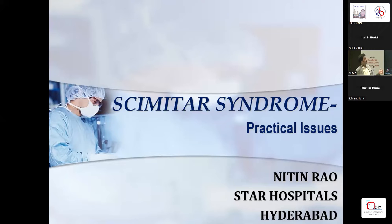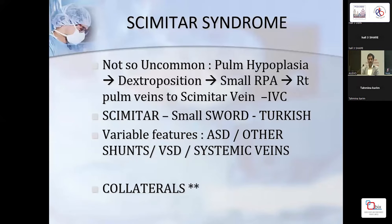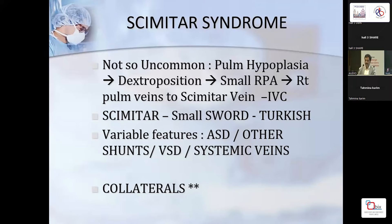Scimitar syndrome is not an uncommon entity, basically characterized by pulmonary hypoplasia. You have dextroposition — put as dextrocardia — you have a small right-side pulmonary artery. The right pulmonary veins drain to a vein called the scimitar vein, which drains to the IVC. The name comes from 'scimitar,' a Turkish word for a small sword. That's the only constant feature. The other variable features include the presence and size of an ASD, other defects like a VSD or PDA, and systemic venous anomalies.